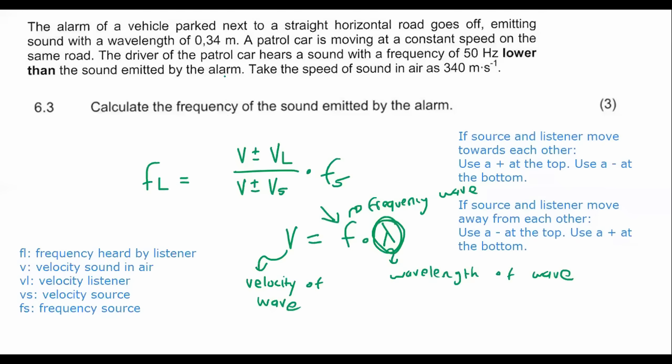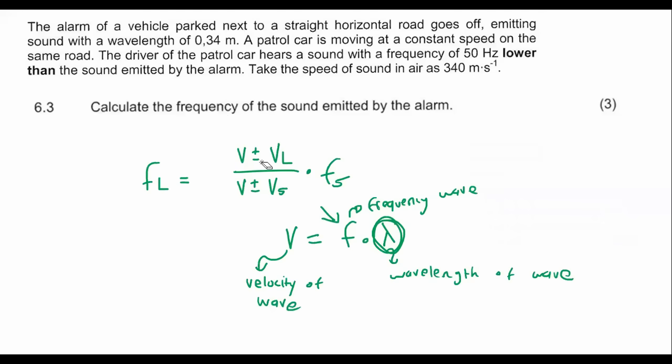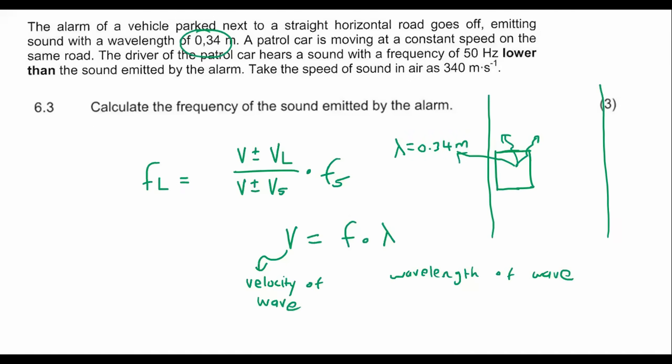So let me quickly draw out a picture for you of what's actually happening in this question. I'm going to draw a top view. Here we have a road, and we have a vehicle parked over there with some alarm going off. That alarm has wavelengths coming from that vehicle with a wavelength of 0.34 meters.